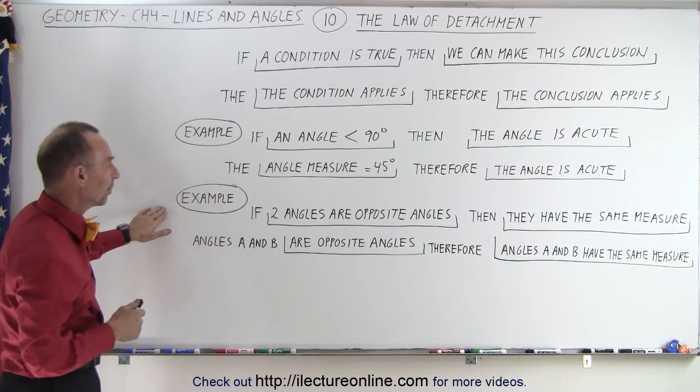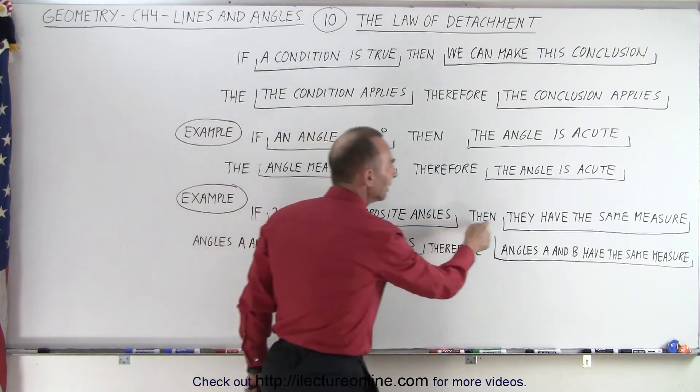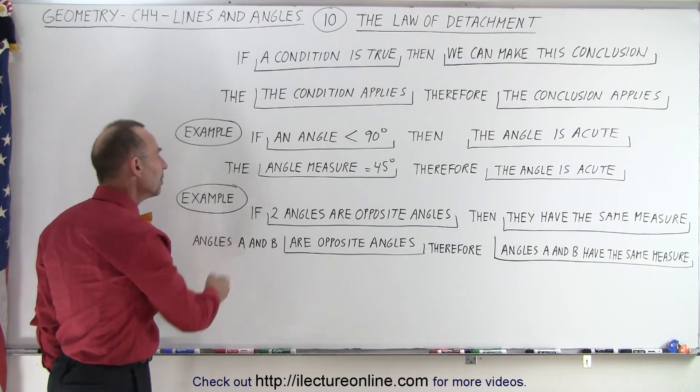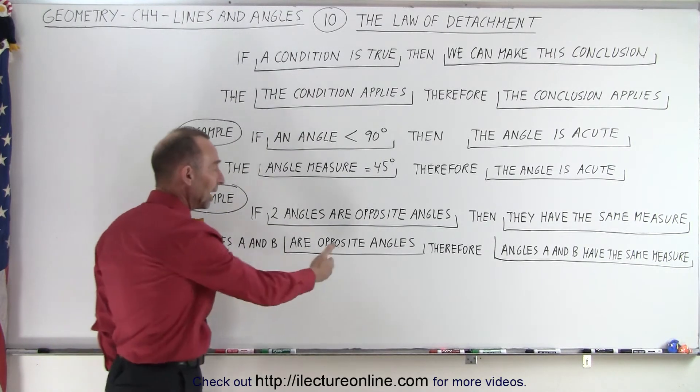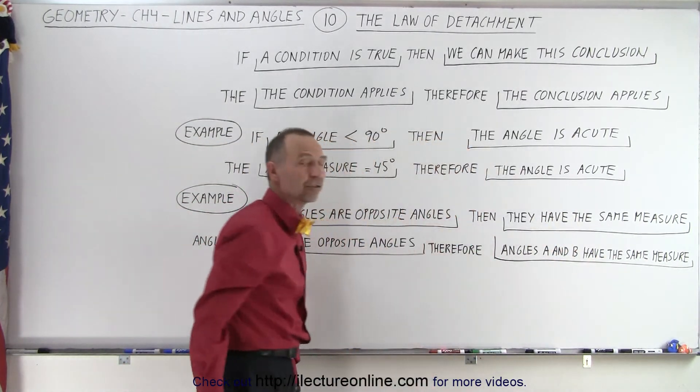Here's another example. If two angles are opposite angles, then they have the same measure. Now we have angles A and B, and we conclude that they are opposite angles, therefore we can also conclude that angles A and B have the same measure.